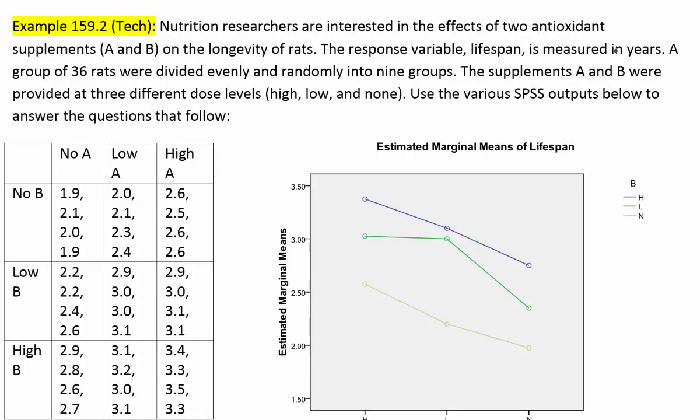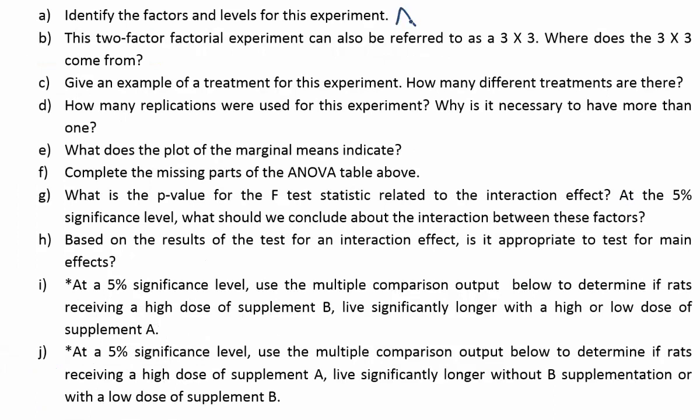The first question says, identify the factors and levels for this experiment. The factors were supplement A and B, and the levels for those factors are basically none of the factor, a low amount of it, and a high amount of it. That's the same for both - no B, low B, high B. So as far as the factors go, there are A factors at three different levels: none, low, and high. And it's the same for B. For factor B, it's level no, level low, and level high. Those are the options.